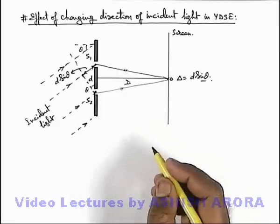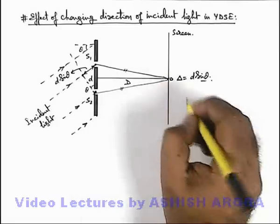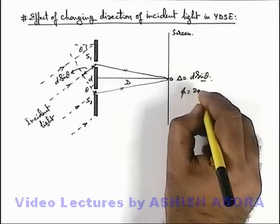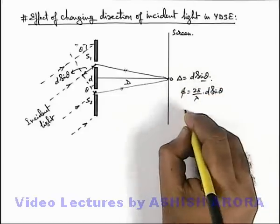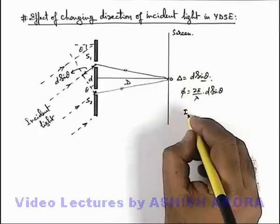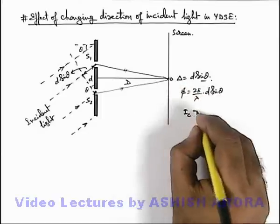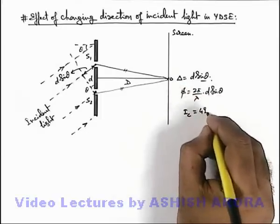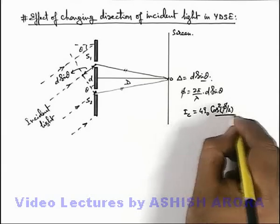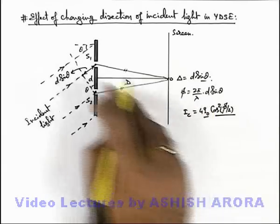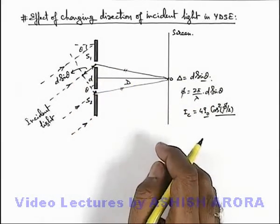In this situation we can directly write that at point O, if we calculate the phase difference it is 2π/λ multiplied by d·sinθ. And the intensity of light at point O, or the center of the screen, we can write as 4I₀·cos²(φ/2), where I₀ is the intensity due to each slit on the screen.